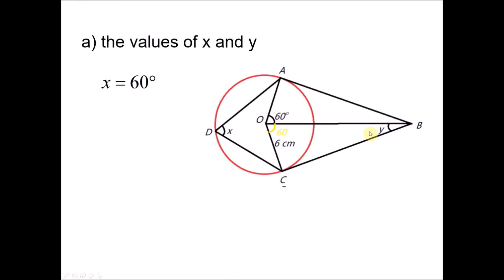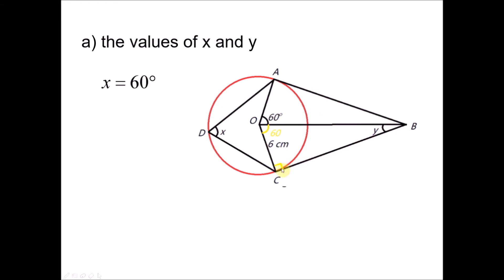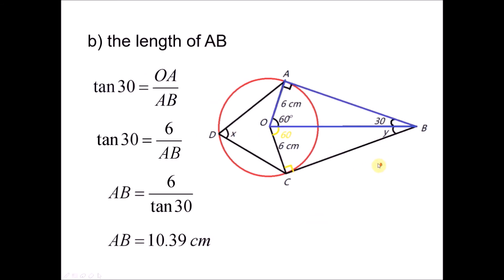No calculations needed for X. To find Y, we look at triangle OBC. Since CB is a tangent, the angle at B is 90 degrees. So Y equals 180 minus 60 minus 90, giving Y equals 30 degrees.